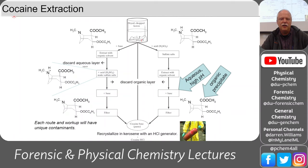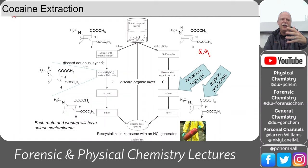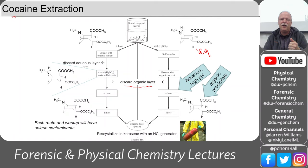To extract cocaine from coca leaves: chop and dry the leaves, add acid to protonate the cocaine so it goes into the aqueous phase. Discard insoluble material, then extract organic materials that aren't protonated into an organic layer and discard it. The cocaine and associated molecules remain in the aqueous phase. Change the pH to deprotonate it and it crashes out of the aqueous solution as an organic crystal — that's cocaine base.